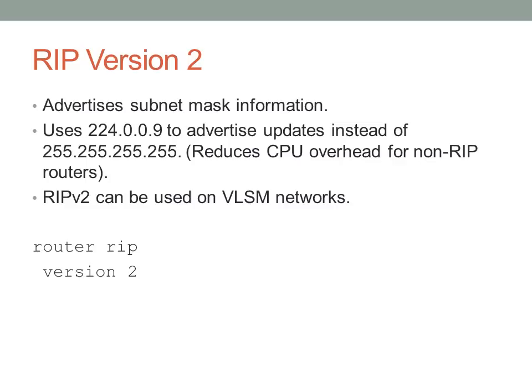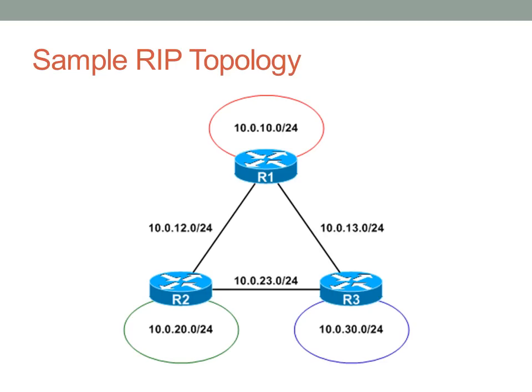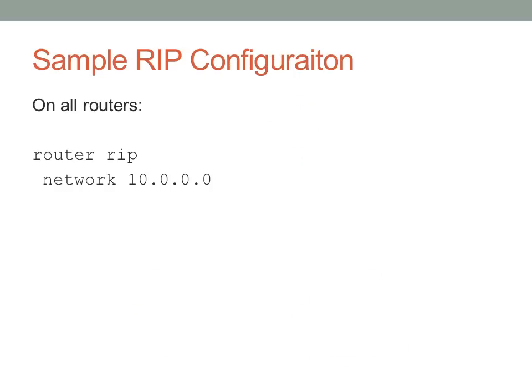RIP version 2 can be used on VLSM networks. Configuring version 2 is very simple — after specifying 'router rip', you specify 'version 2'. In a sample RIP topology where all subnet masks are the same length — all /24 — it's a good candidate for RIP since it's also a very small network. With all 10.0.x.x subnets of the same length in the same major network, all you need to do is configure 'router rip' with network 10.0.0.0 on each router. By specifying the major classful network, all routes are advertised automatically without worrying about individual subnets.